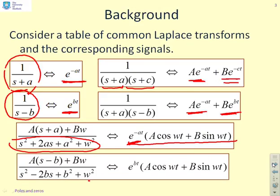However, what if we choose something whose denominator is s squared minus 2bs plus b squared plus omega squared? Now you notice we get an e to the plus bt, which is a divergent signal.